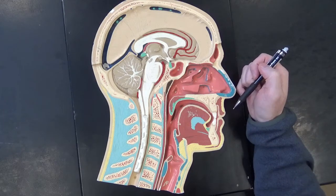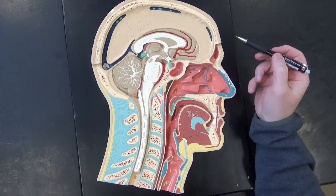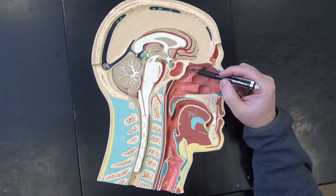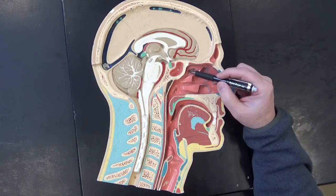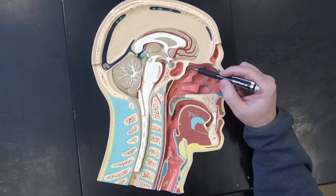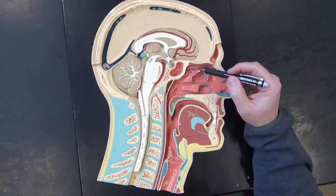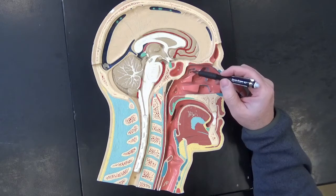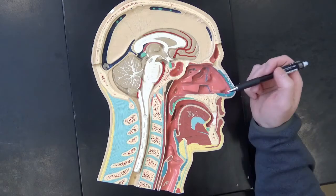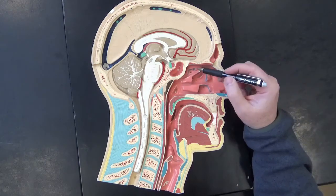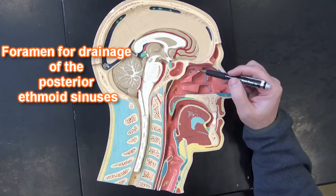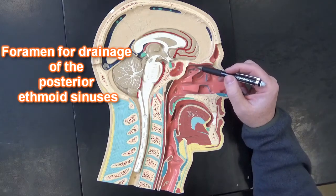Some of the structures we can see here — underneath, if we cut a little section out of the superior nasal concha, we would be able to see these holes right here. Those holes are going to be for drainage of the posterior ethmoid sinuses.